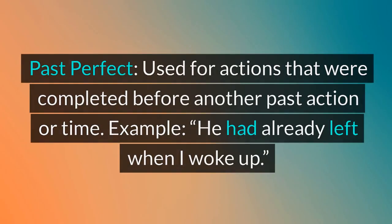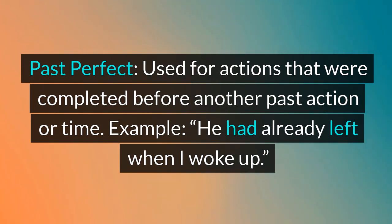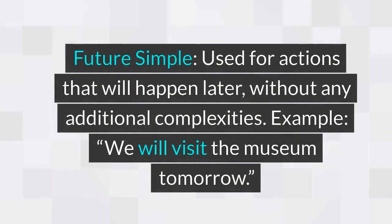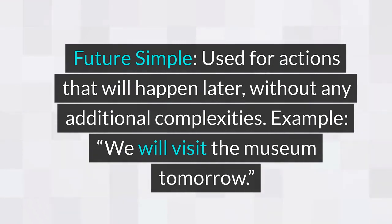Past perfect: used for actions that were completed before another past action or time. Example: he had already left when I woke up. Future simple: used for actions that will happen later, without any additional complexities. Example: we will visit the museum tomorrow.